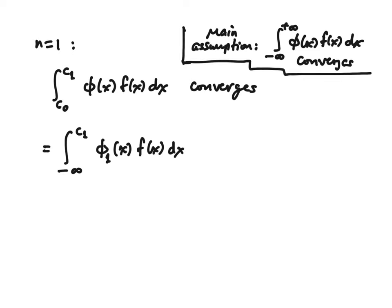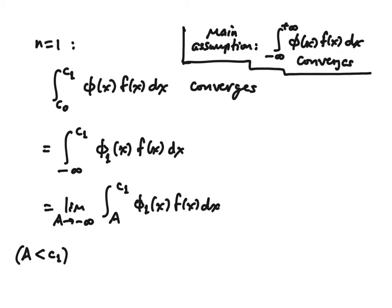The question is: can we still make the change of variables? We're going to write it as the limit as a goes to minus infinity, of the integral from a to c_1. We can certainly make a u-sub in this integral from a to c_1 because those are just finite limits. We have to carry the limit sign along, and the same process as before is going to yield a similar result.